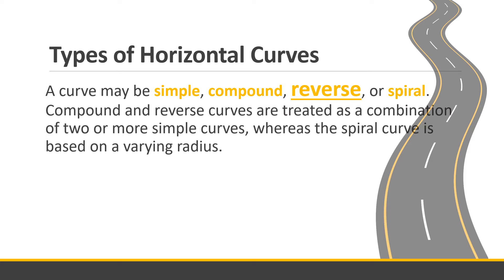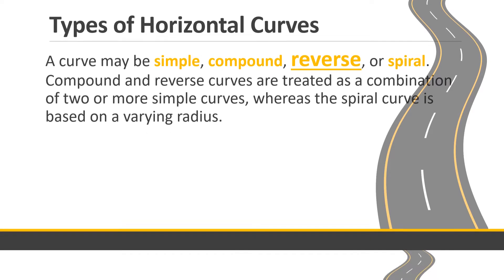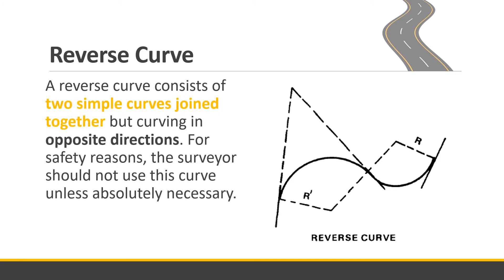We have been discussing that there are four types of curves, and one of them is the reverse curve. A reverse curve consists of two simple curves joined together but curving in opposite directions — one clockwise, then counterclockwise. For safety reasons, surveyors should not use this curve unless absolutely necessary. S-curves are rare on highways and roads.